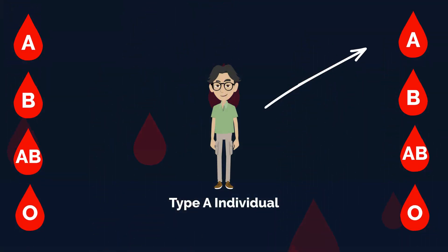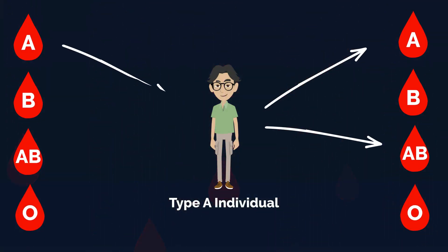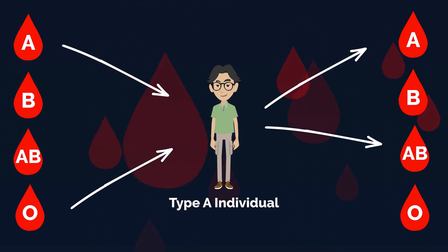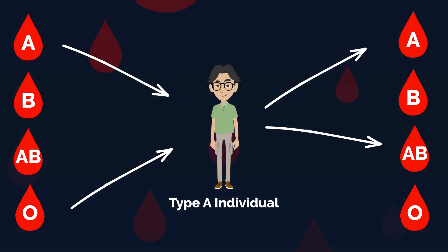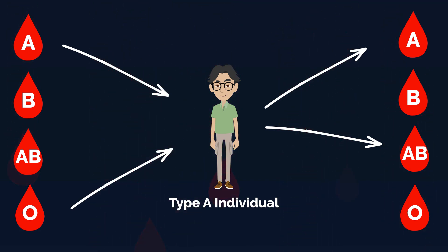Type A. Individuals with type A blood can donate blood to other type A individuals as well as type AB individuals, but they can receive blood only from type A and type O.